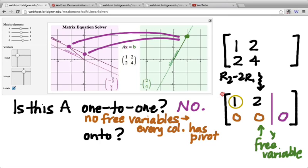So this is not a one-to-one transformation. Thank you, Group A. What about onto? How do you tell, based on the matrix of a linear transformation, whether the transformation was onto? There's a pivot in each row. There's a pivot in every row. And why is that?